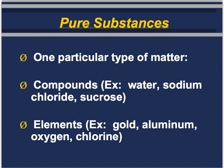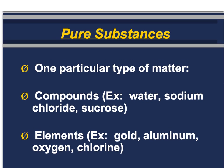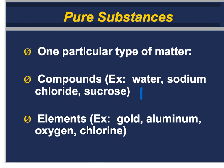Pure substances are basically just one particular type of matter — this could be a compound or an element; both are known as pure substances. The idea is that pure substances have constant compositions. For example, water is always written as H2O, and sodium chloride or salt is always written as NaCl. Gold is always made of the same type of atoms. A compound is always made of the same types of atoms in a constant ratio.